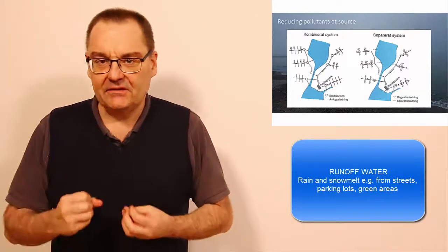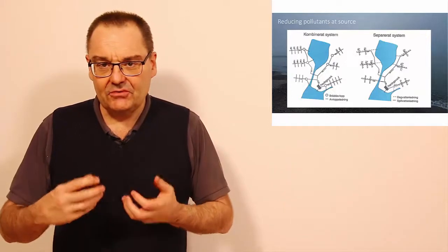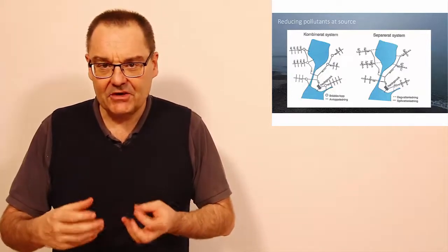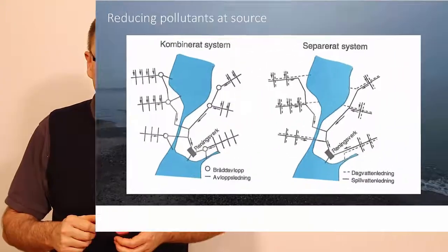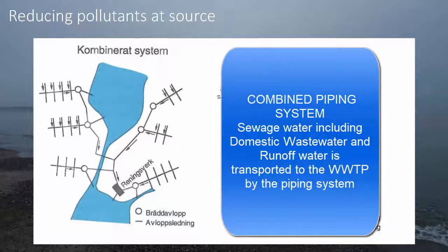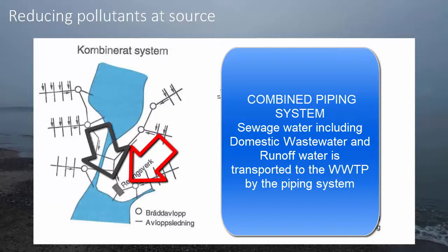Keeping this in mind, there are two different types of piping systems that can transport these waters down to the wastewater treatment plant. The first is what we call a combined system — that is when the domestic wastewater and the runoff water are collected in the same piping system, which ends up at the wastewater treatment plant.